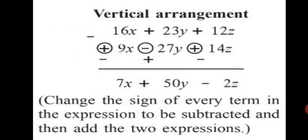For vertical arrangement, you arrange them vertically — the first expression and then the second expression. Since you are subtracting, you will change the signs of all the terms in the second expression: plus 9x becomes minus 9x, minus 27y will become plus 27y, and plus 14z will become minus 14z. Then you carry out the operations: 14 minus 12 gives minus 2z, 23 plus 27 gives 50y, and 16 minus 9 gives 7x. Change the sign of every term in the expression to be subtracted, and then add the two expressions.